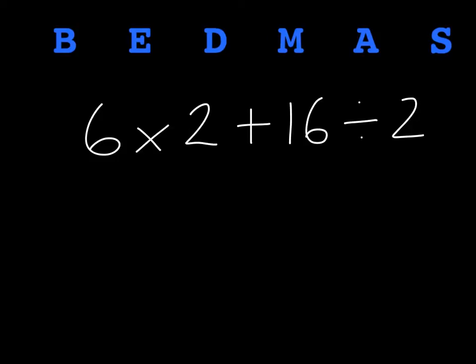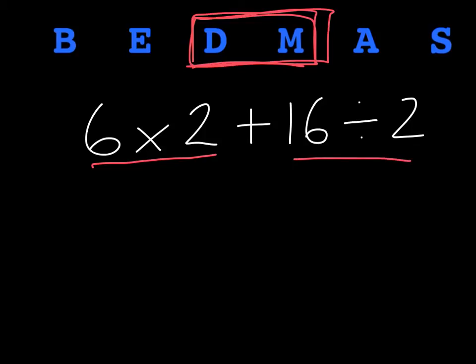Our next step is now to look and see if we have any division or multiplication. Remember, we do those together in the order we see them. So I don't have to search out the division first then the multiplication. I can do whatever one I see first. And sure enough, I have a multiplication expression right there and a division expression there. So I can do them in that order. Six multiplied by two is twelve plus sixteen divided by two which is eight. And I'm almost done.